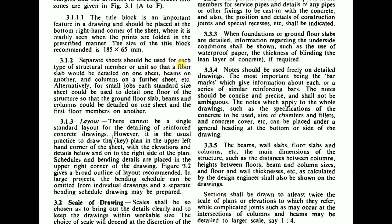Separate sheets should be used for each type of structural member or unit — a floor slab detailed on one sheet, beams on another, and columns on a further sheet. Alternatively, for small jobs, each standard sheet could be used to detail one floor of the structure, so the ground floor slab, beams, and columns can be detailed on one sheet and the first floor members on another. For small projects, ground floor slab and beam details can be kept in a single drawing.